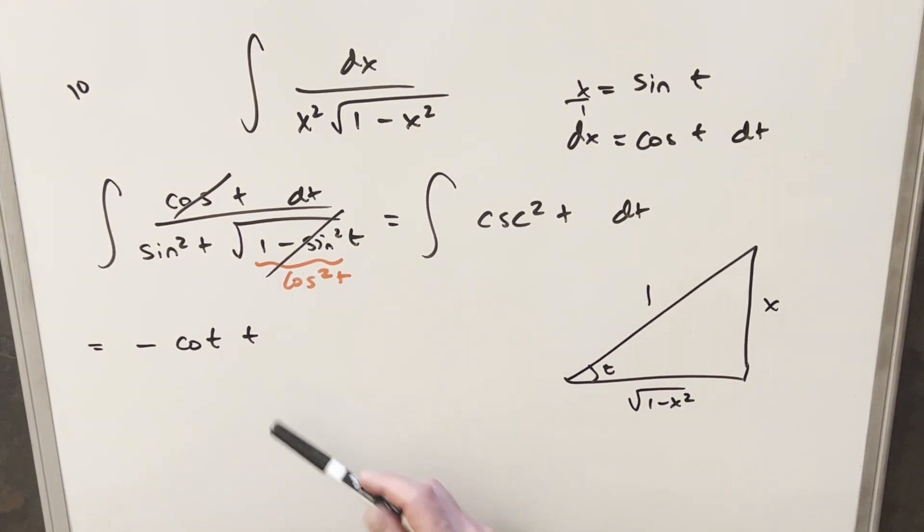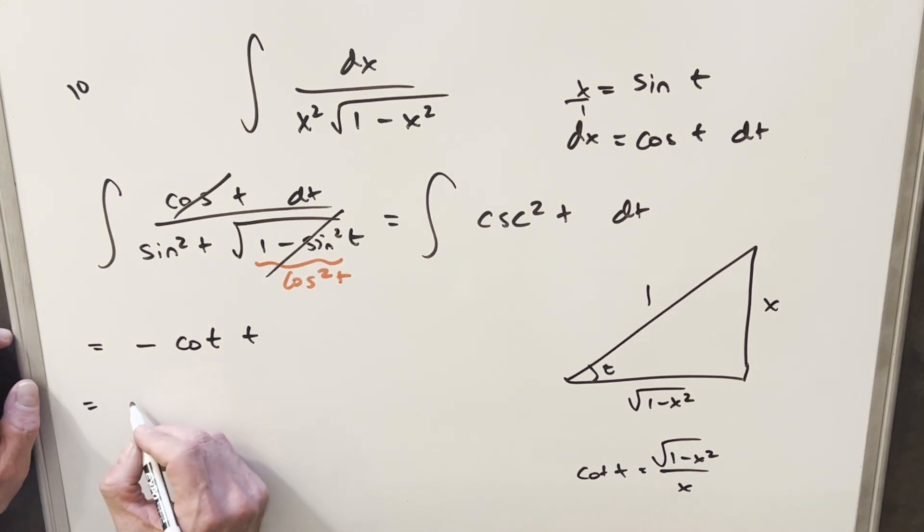So then to get our value of cotangent, we just want adjacent over opposite. So that's going to be square root of 1 minus x squared over x. We can take this, we'll plug this back in here. And so for our final solution, we have minus square root of 1 minus x squared over x plus c. And that's it.